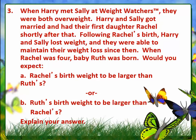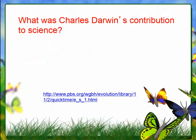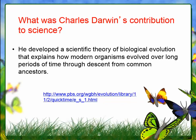On question number three, either answer could be correct — it just depends on the explanation you give. So what was Charles Darwin's contribution to science? He is the one who developed the scientific theory of biological evolution. He also explains how that occurs over time through the process of natural selection.